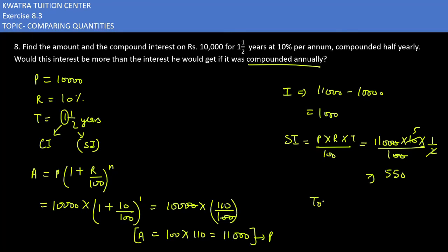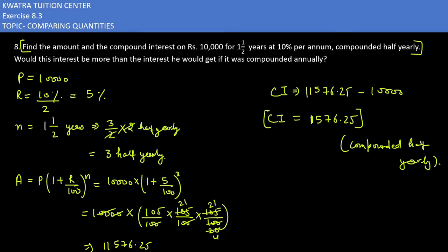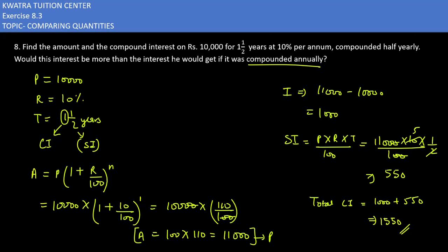Total compound interest equals 1,000 plus 550, which is rupees 1,550. The question asks whether this interest is more than when compounded half yearly. In the half-yearly case we got 1,576.25 and in the annual case we got 1,550. So we compare and conclude: the compound interest is higher when compounded half yearly.